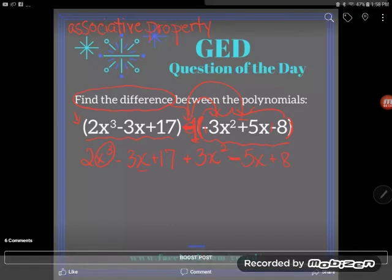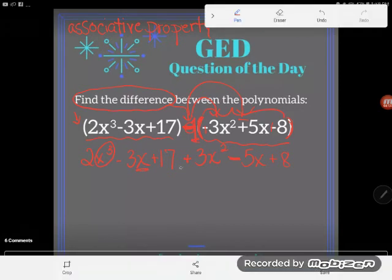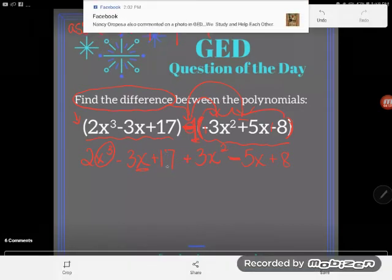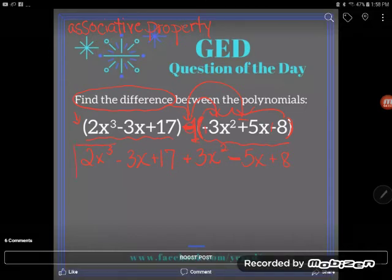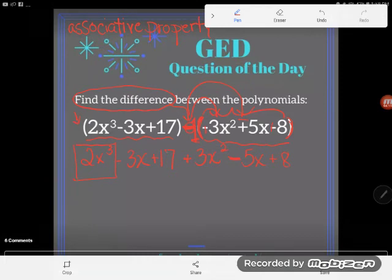In algebra, we tell if things are the same kinds of things if their variable portion is the same. There's the variable portion of that term - x cubed. Here's the variable portion of that term - x. 17 of course has no variable portion, it's a plain old regular number, and so on and so forth. So I am going to do what's called combining like terms.